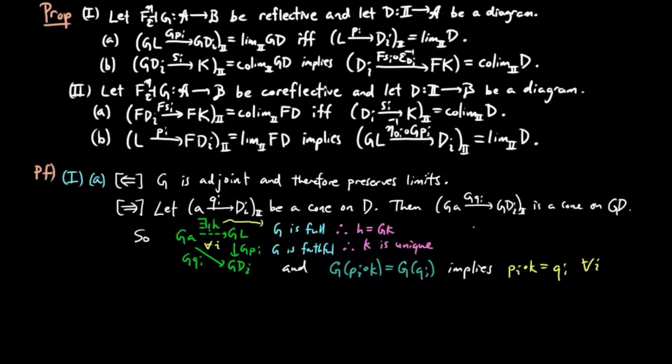So we have a unique factorization of the cone QI through the cone PI. Therefore, the cone PI from L to DI is the limit of D.